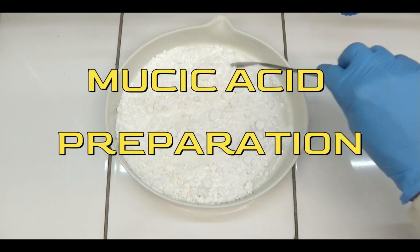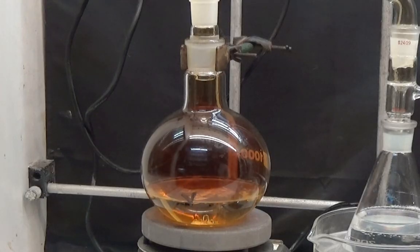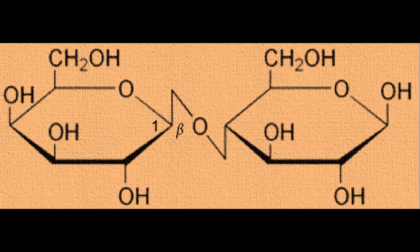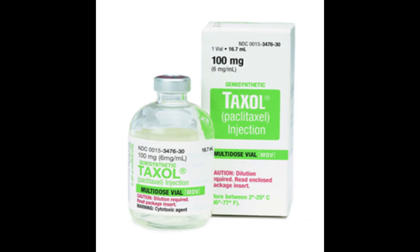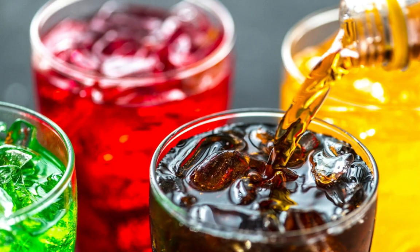In this video, we are going to obtain mucic acid. Mucic acid is obtained by oxidation with nitric acid of sugars such as lactose, quercite, dulcite, and galactose. Mucic acid has been used as a precursor to taxol, an anti-cancer drug, and it has been replaced by tartaric acid in sodas.